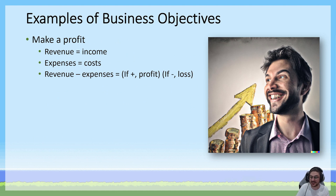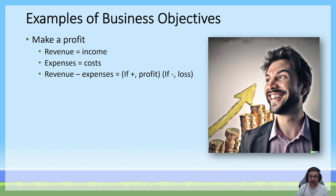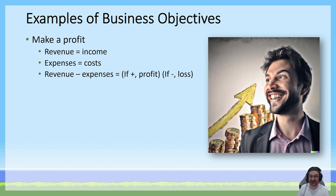Some examples of business objectives listed in the study design include to make a profit. This is a financial metric. Revenue is the money your business makes — the income — and expenses are the costs. Anytime your business makes a dollar, that's revenue; anytime it spends a dollar, that's an expense. The formula is revenue minus expenses. If the result is positive, you've made a profit; if negative, you've made a loss. That's the foundation of accounting.